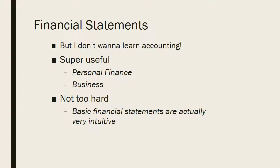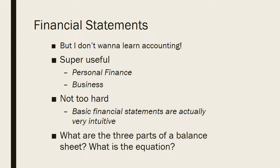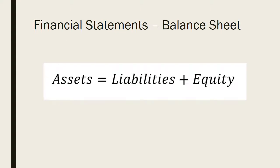So let's dive in with the three parts of the balance sheet and the equation. The balance sheet equation is: assets equals liabilities — your debt — plus equity. The balance sheet is called the balance sheet because it has to balance. This is an accounting identity that must be followed. So let's dive in from assets and move from there.